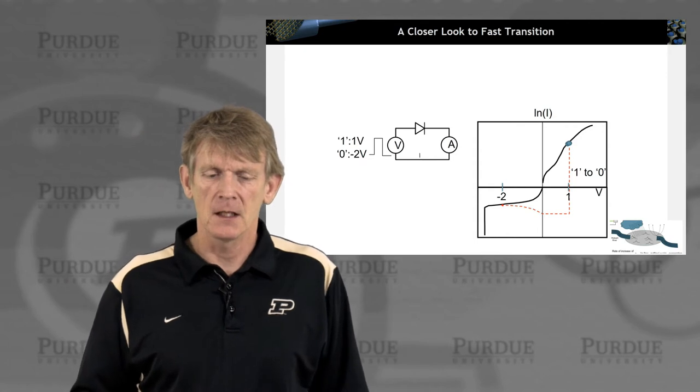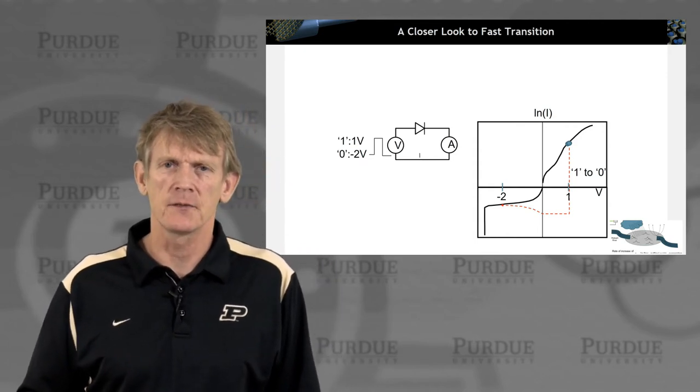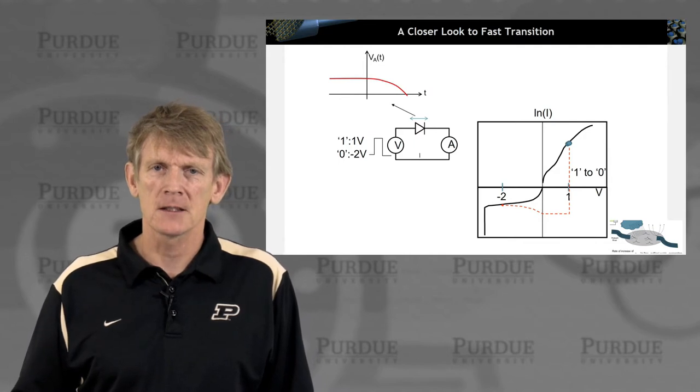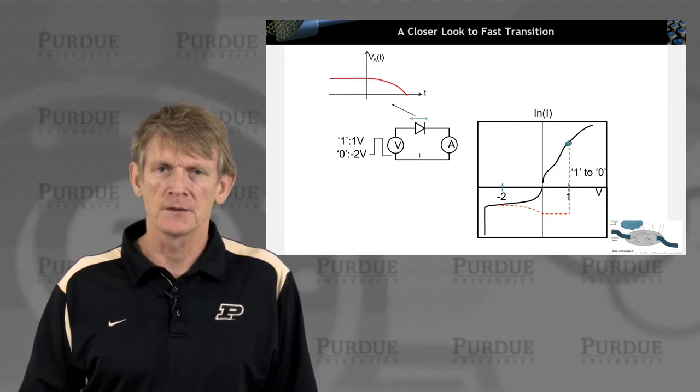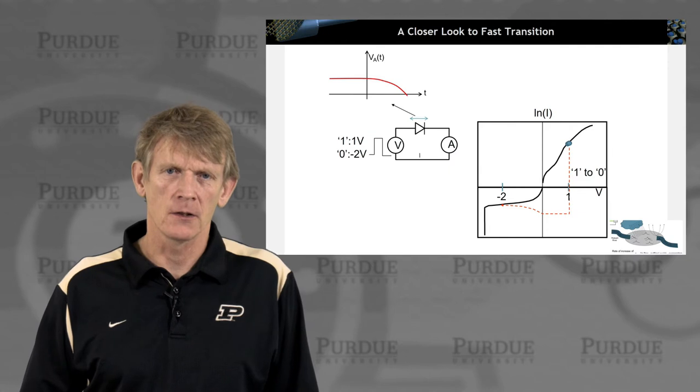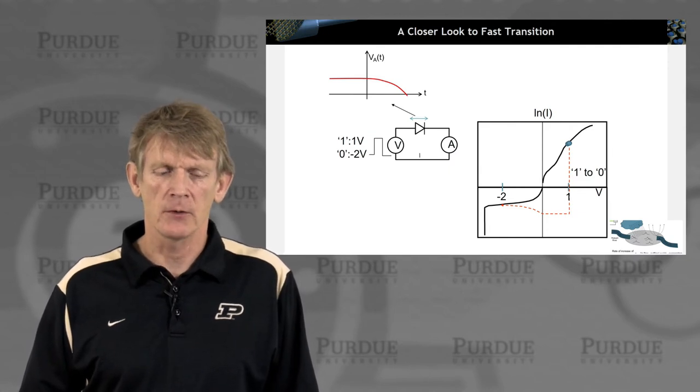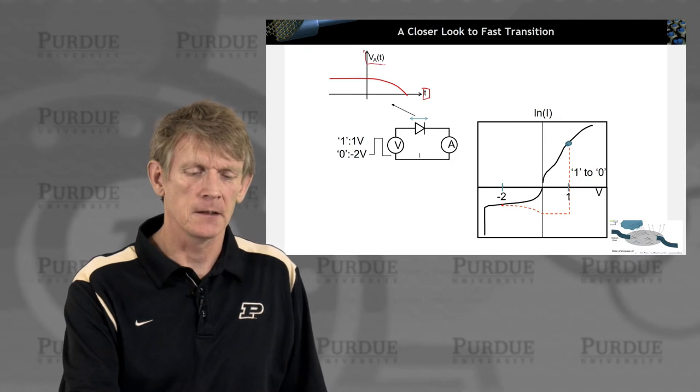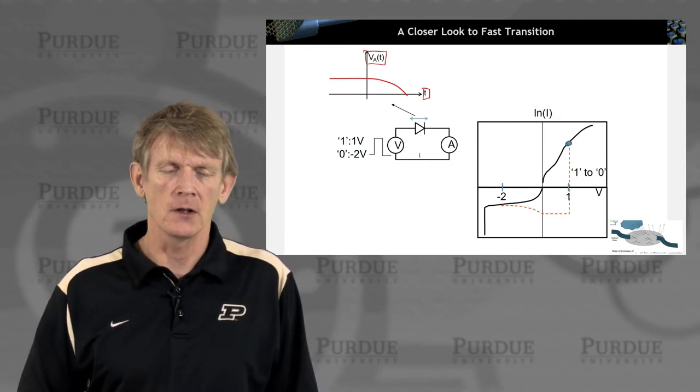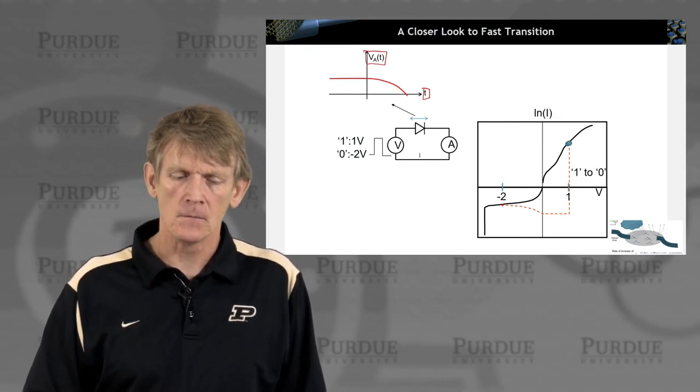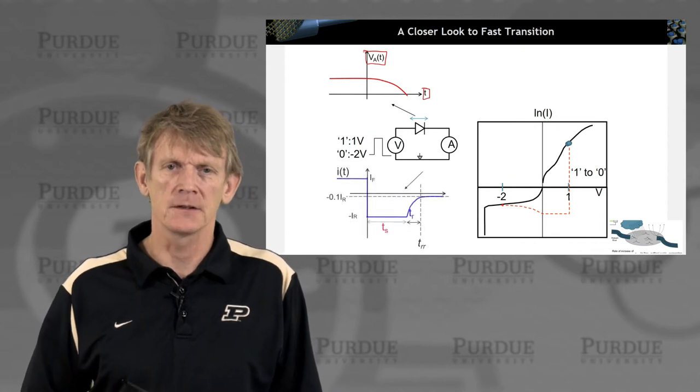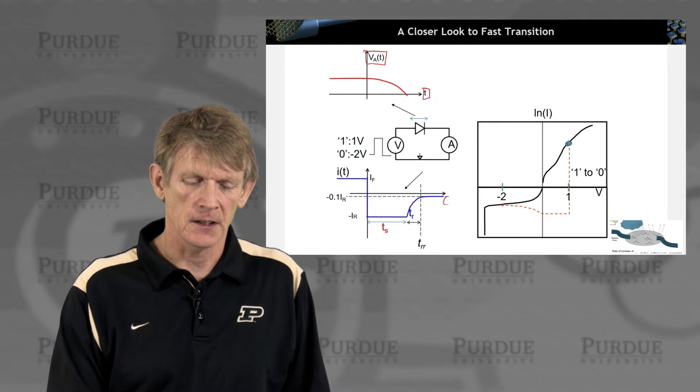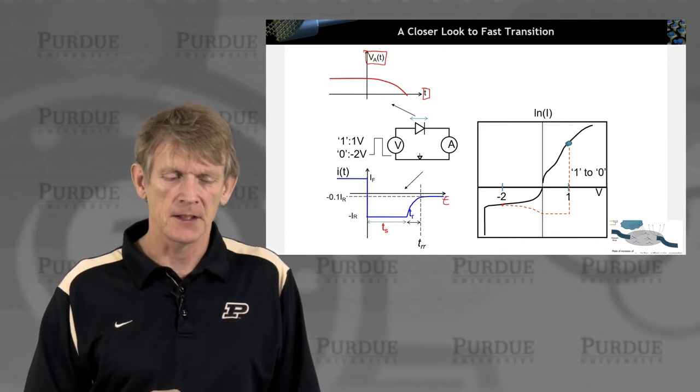So let's take a closer look at this fast transition region. So imagine you want to plot the voltage and the current separately. So here we have a transition as a function of time, and we're plotting the voltage that is on the diode, and we're going to plot the current that is flowing through the diode. So again, as a function of time here, and as a sketch here,